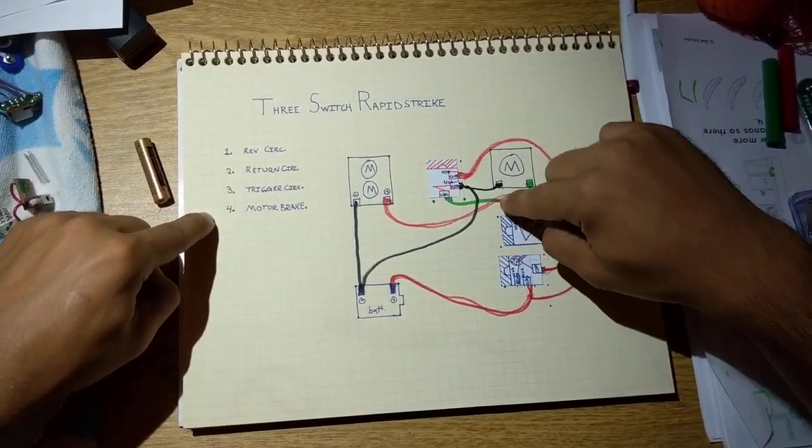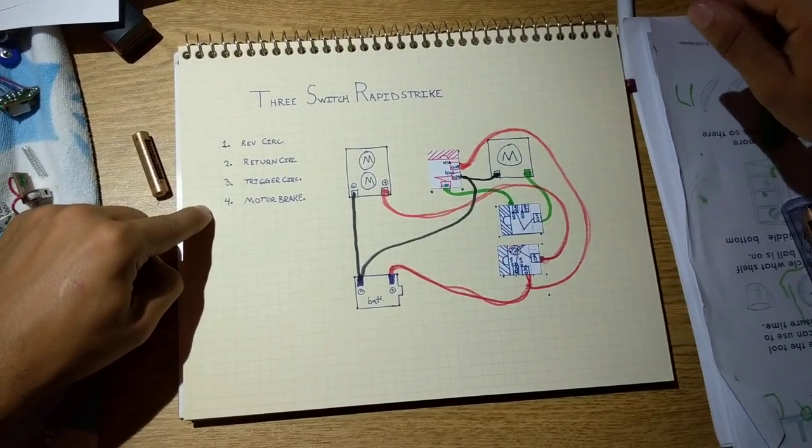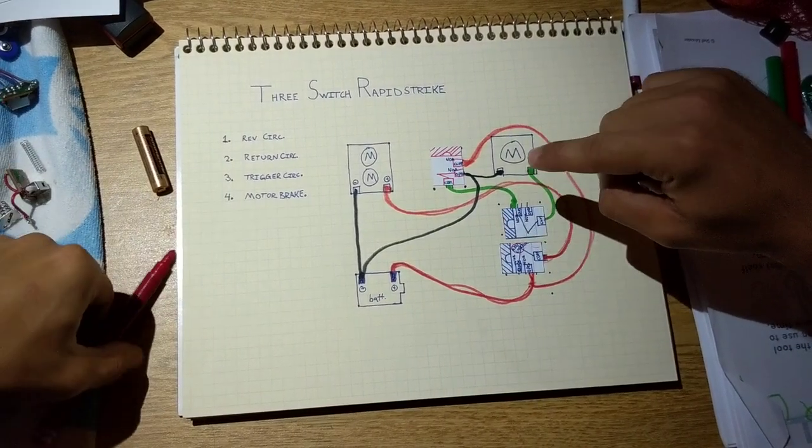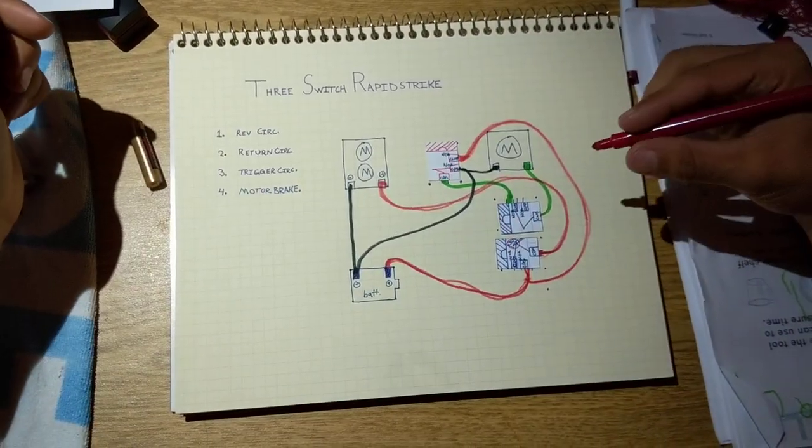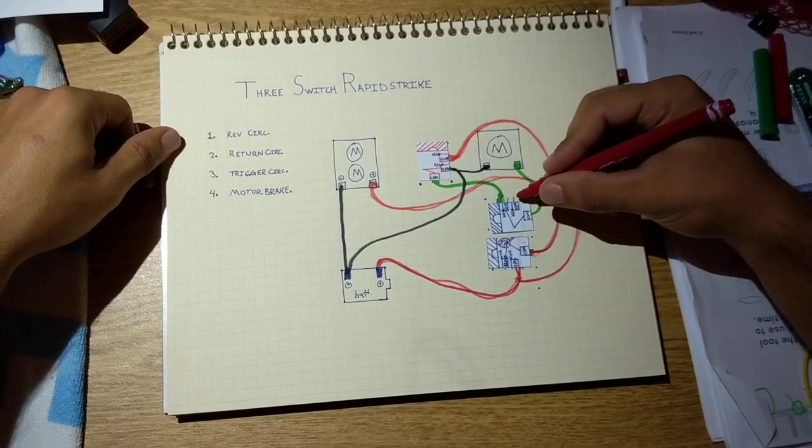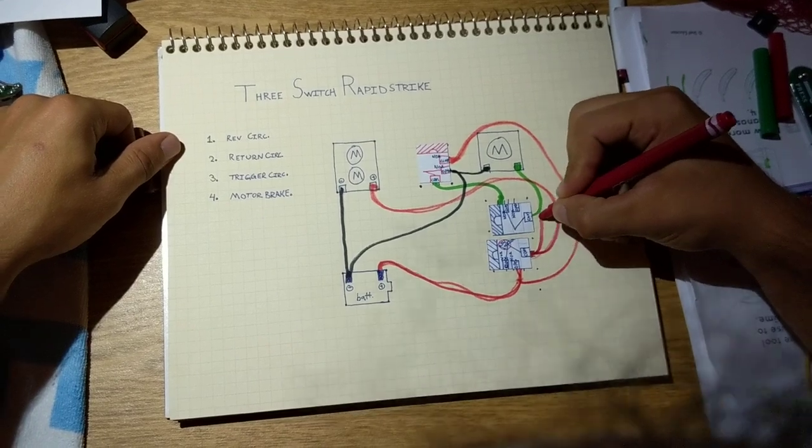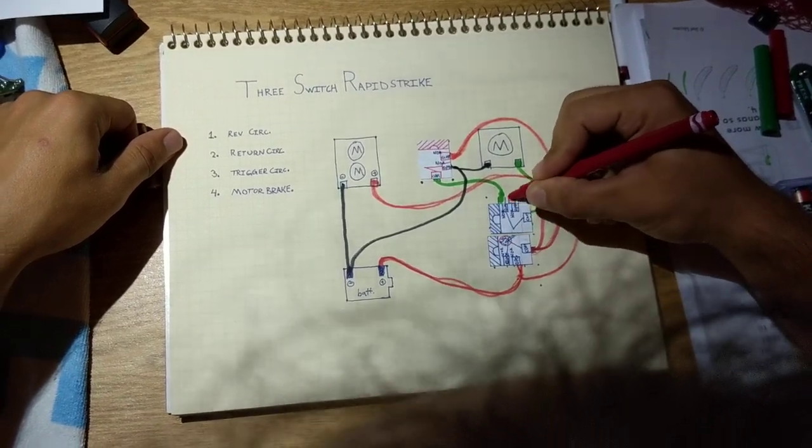Alright, where do we go from here? The trigger. We need to trigger and all we need to do is pull it off the common to the normally open. The reason why we pull it off the common is because we don't want to pull the trigger without the rev switch going. That doesn't sound like a good idea.